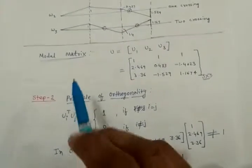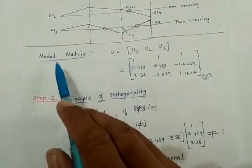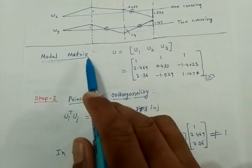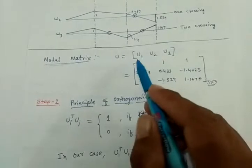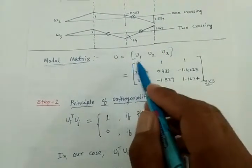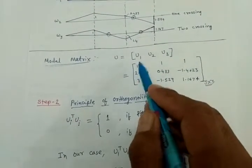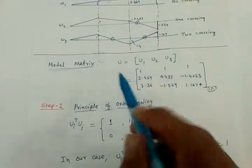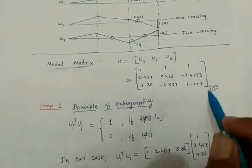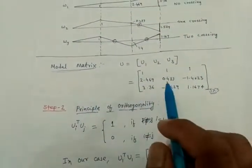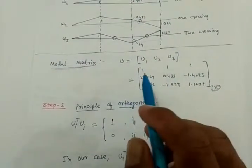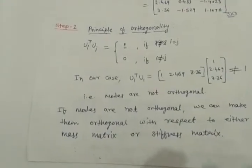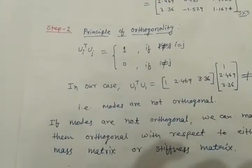Now I start from here. What I have written is the modal matrix. The modal matrix is formed when you write your mode shapes u1, u2, and u3 in a matrix form. This particular matrix is known as the modal matrix. Remember this is a 3×3 matrix and it is very important — it will be useful further.